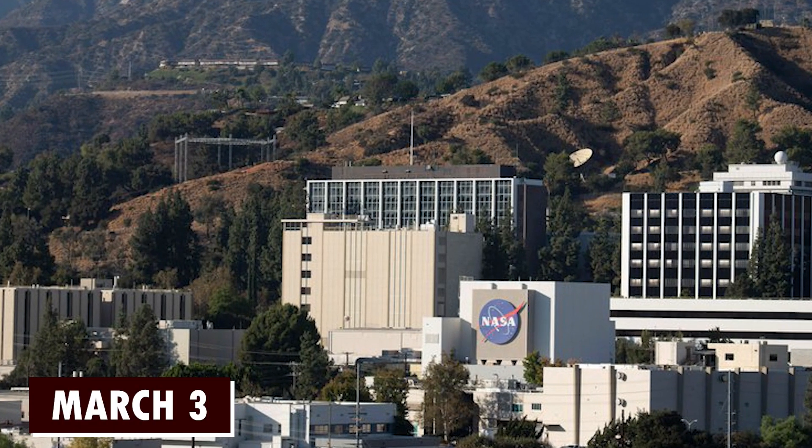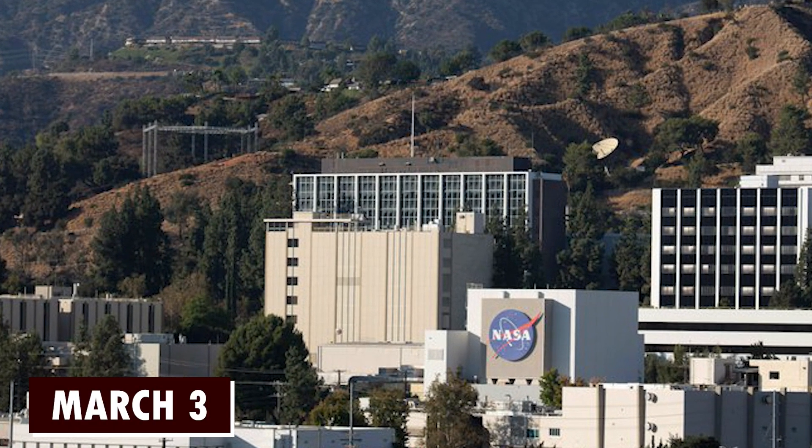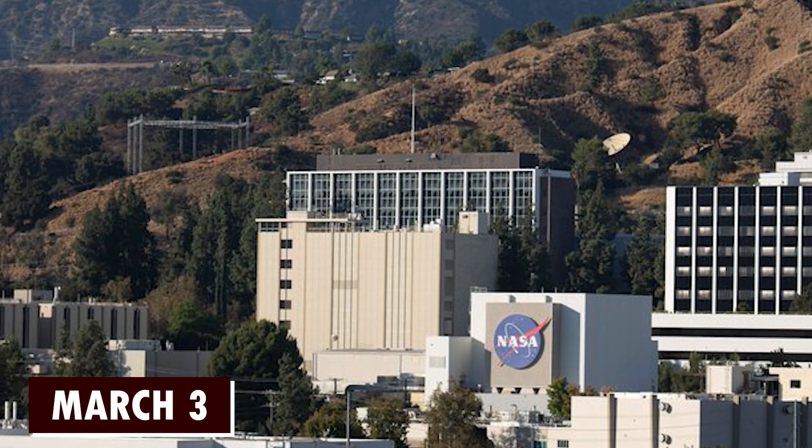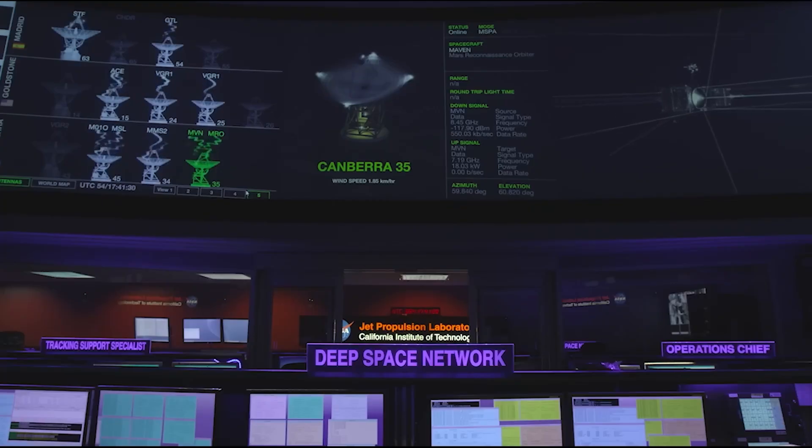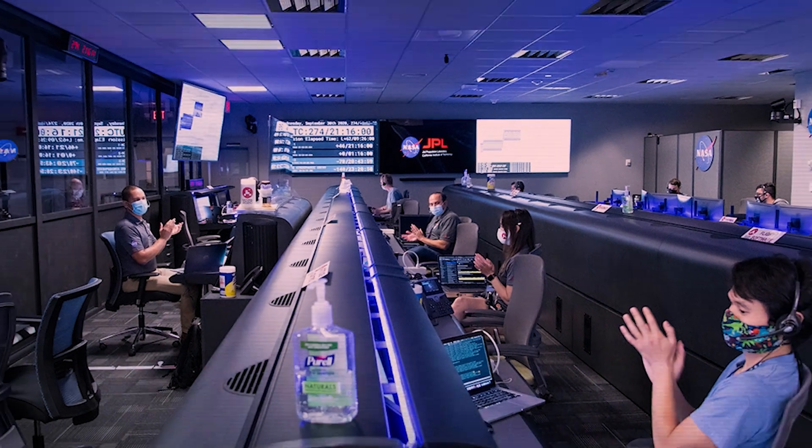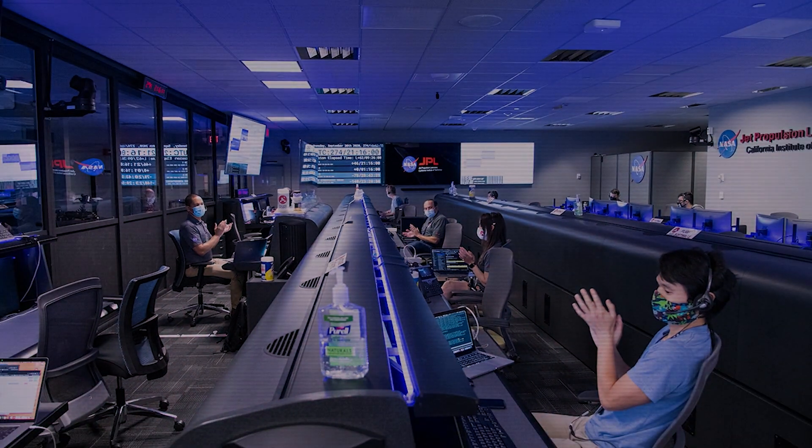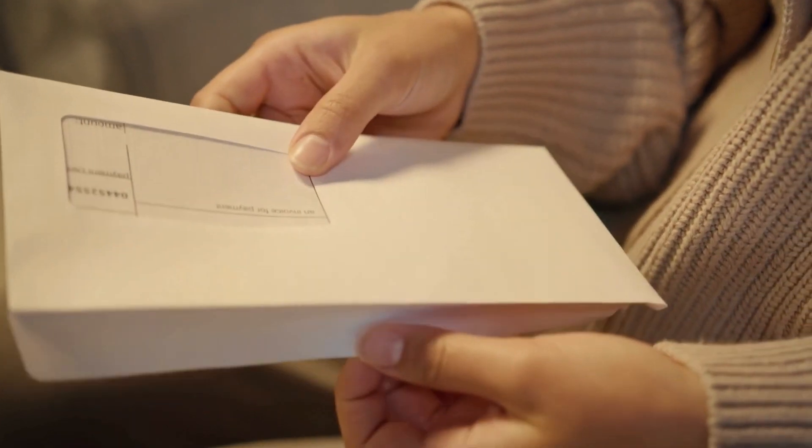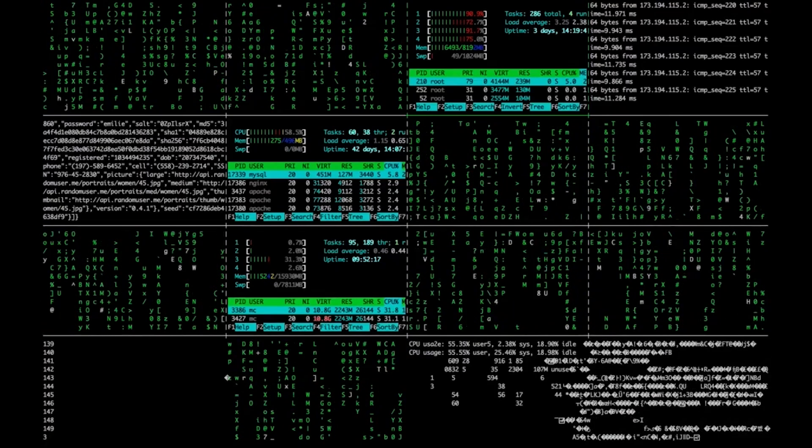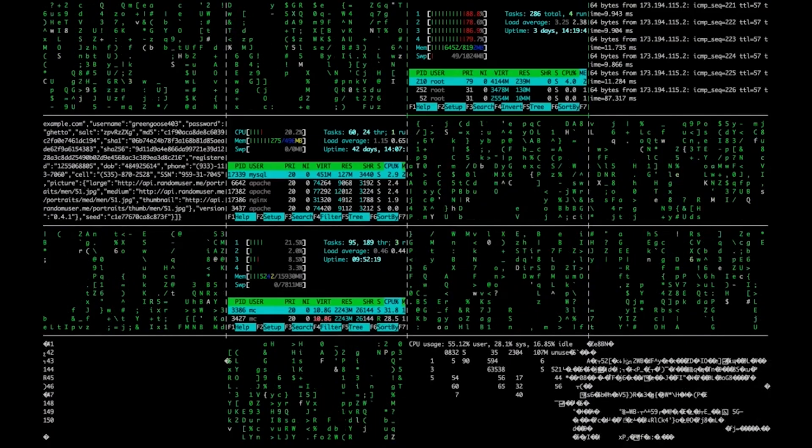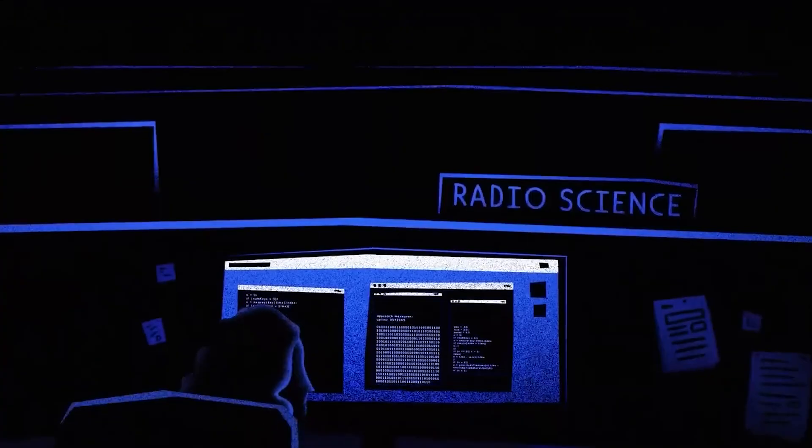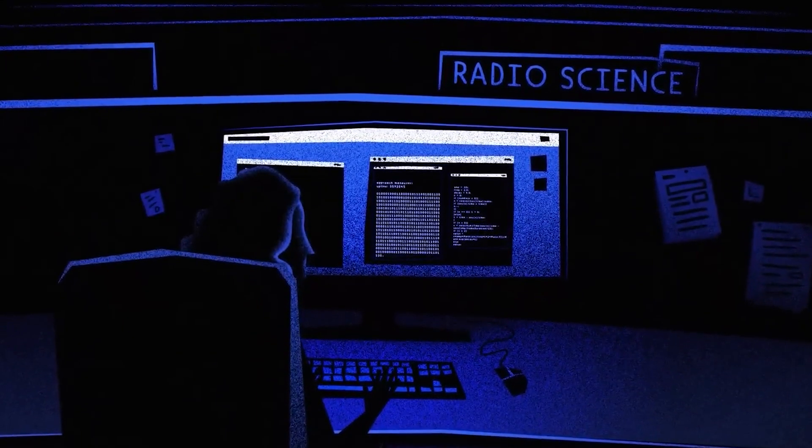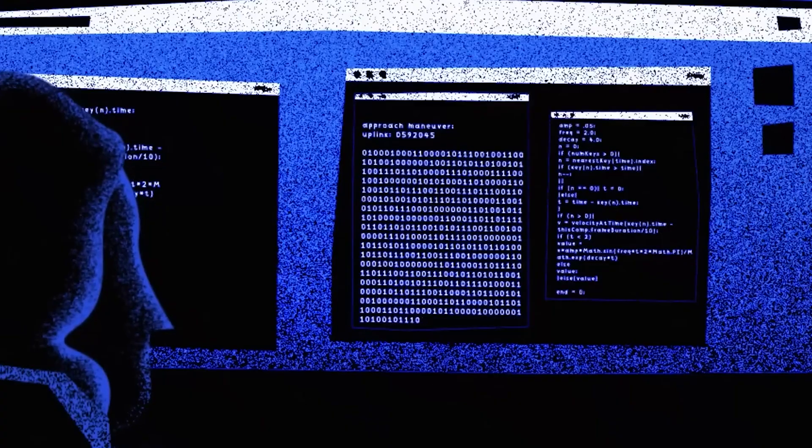On March 3rd, engineers at NASA's Jet Propulsion Laboratory were greeted with a transmission unlike any seen in recent times. It wasn't the usual data feed. It presented a comprehensive overview of Voyager's entire flight data system memory. Picture receiving a letter in a language you believe to be lost, containing the key to saving a mission hanging on the brink of silence. This was the moment. A glimmer of hope amidst the vast emptiness.